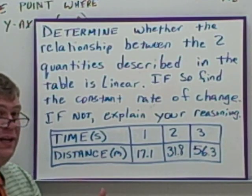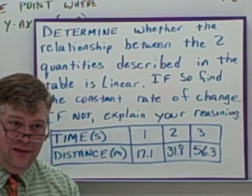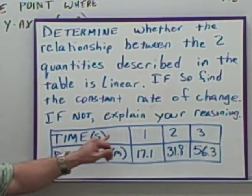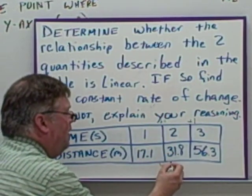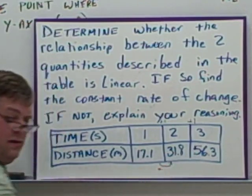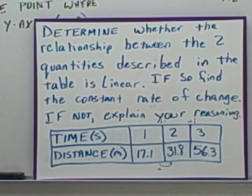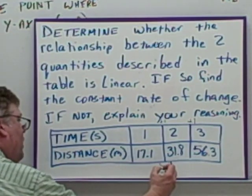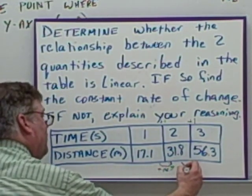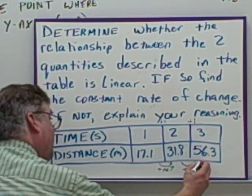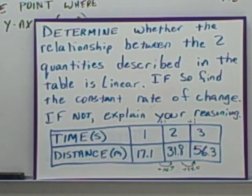Remember, explain is a key word saying that you need to have at least two sentences, complete sentences. All right, so here we go. We have the time going from 1 to 2 is a plus 1, from 2 to 3 is a plus 1. From here to here, we have a plus 14.7. From here to here, we do the second minus the first and we're going to get plus 24.5. Right there, we can tell it's not a constant rate of change. So we know it's not linear. How do we explain that?